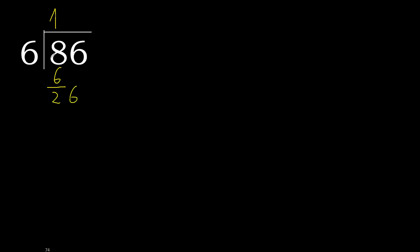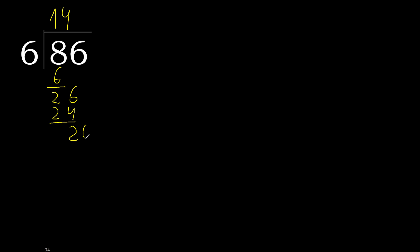Next, bring down: 26. 6 multiplied by 5 is greater. 6 multiplied by 4 is 24, which is not greater. Subtract. Next, there is no more number, therefore we complete — always complete with a 0 here, with a decimal point.